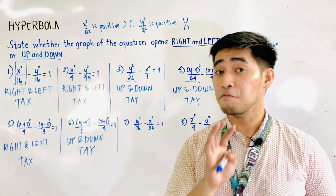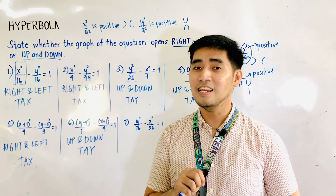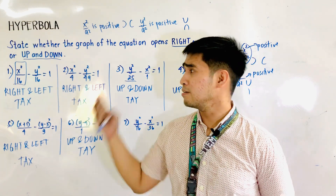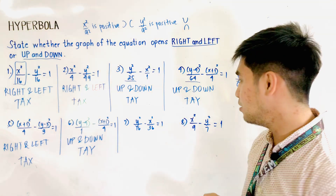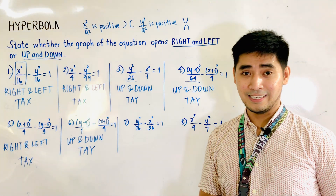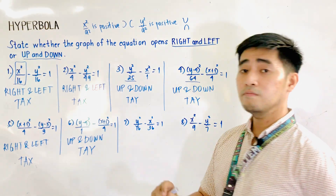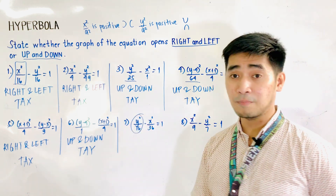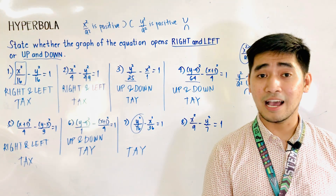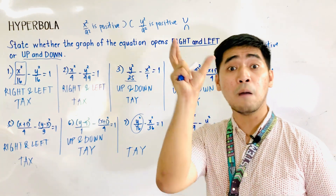It is very easy to identify the nature of the graph of the hyperbola from the given equation. We have y squared over 16 minus x squared over 36. Therefore, y squared over 16 is positive, and it is under TIE — transverse axis vertical or y. If it is transverse axis vertical, therefore the graph opens up and down.